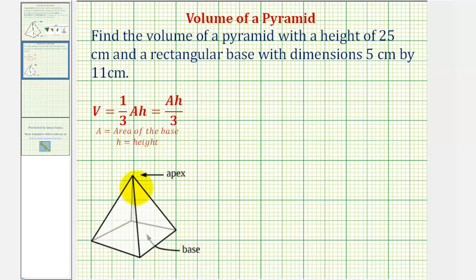Let's label the dimensions given on this pyramid. The height is 25 centimeters, so this length here would be 25 centimeters, and the base has dimensions 5 centimeters by 11 centimeters. We'll label this 5 centimeters and this 11 centimeters.